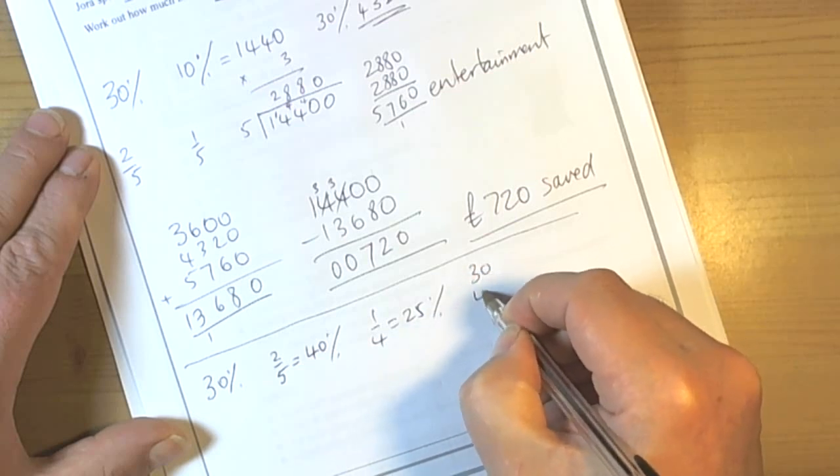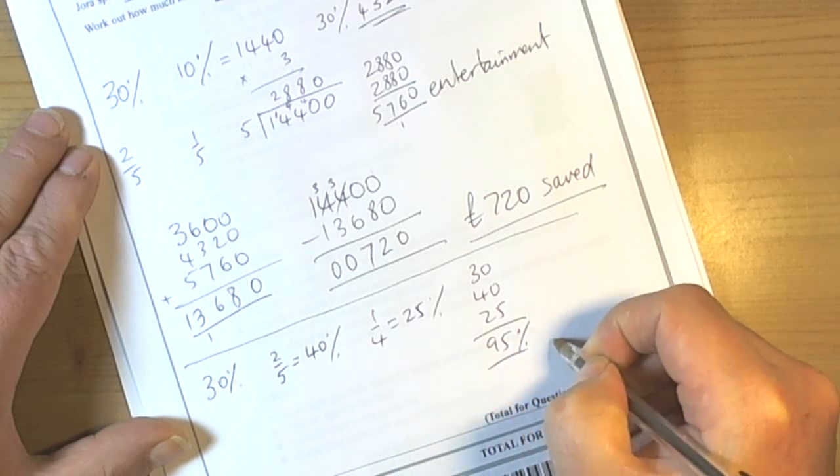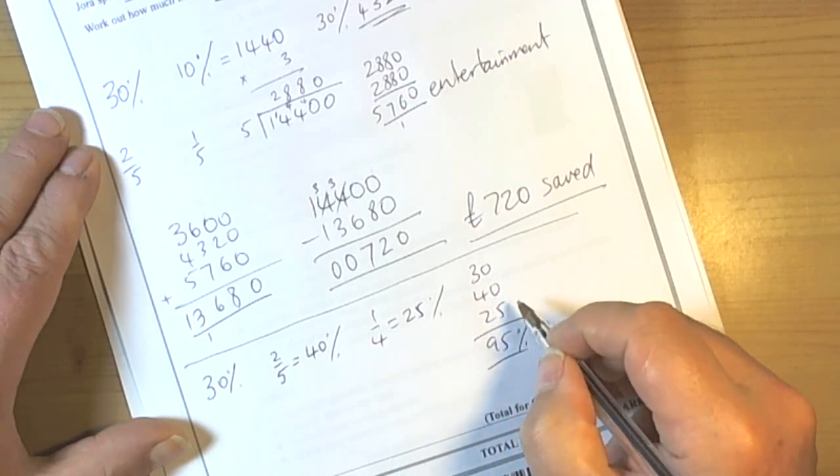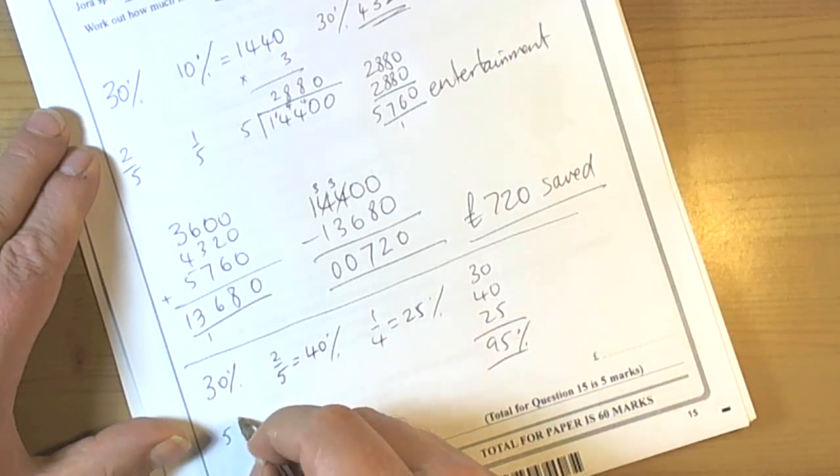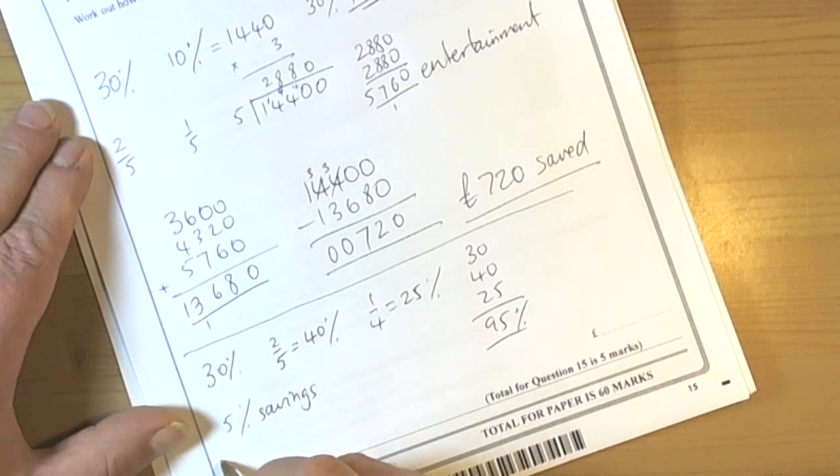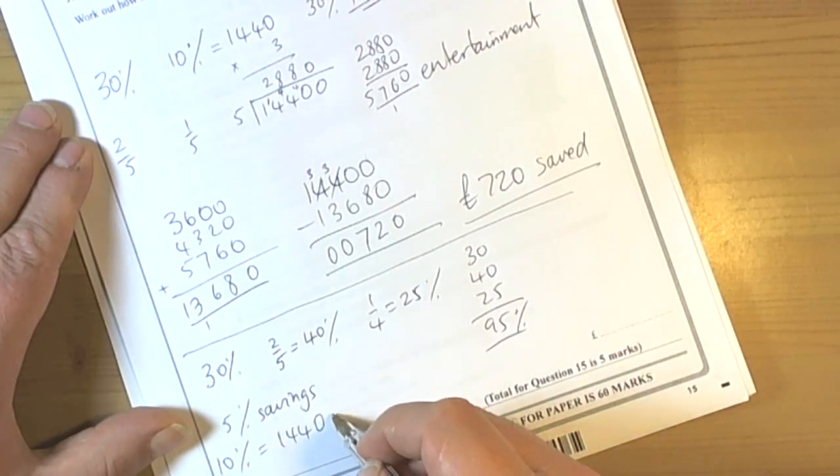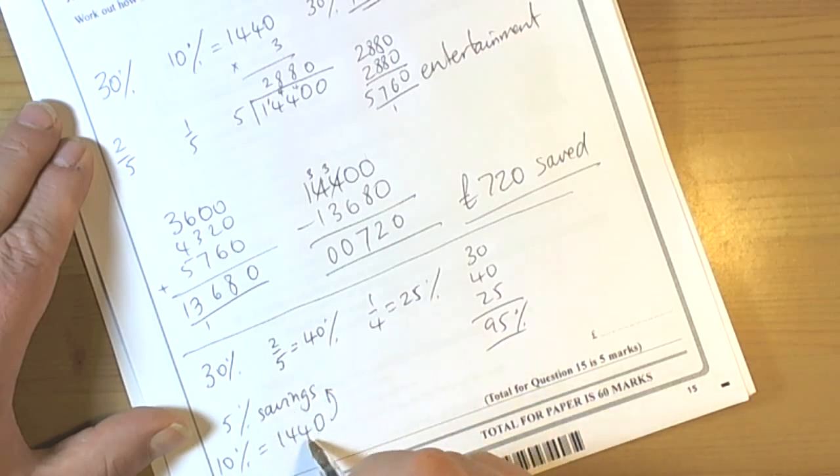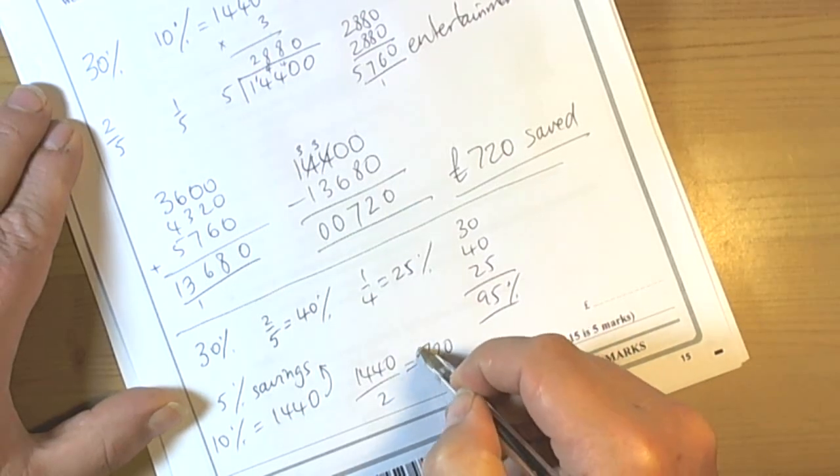So 30, 40, 25, 95, so 95% of his salary was spent on living, rent, entertainment, etc. So that meant 5% savings. Well we already saw earlier that 10% was £1,440. 5% must be a half of that, and if we halve 1440, then we get the same answer. It's still going to be £720.